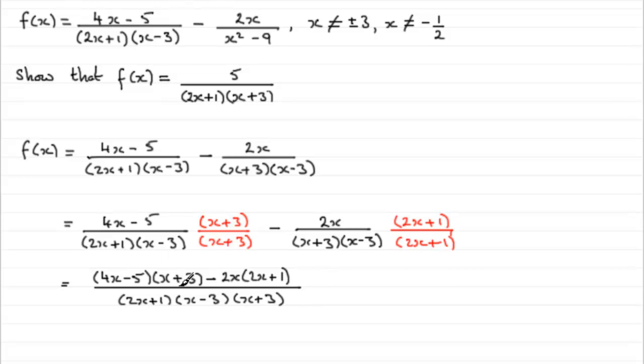Now all that's left to be done is just simply to expand the top out. Don't expand the bottom out. So we just leave the bottom still as it is. 2x plus 1, x minus 3 and x plus 3 but you've got to expand out the top.